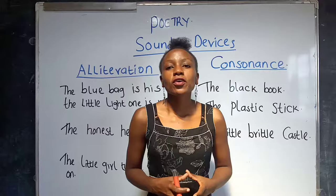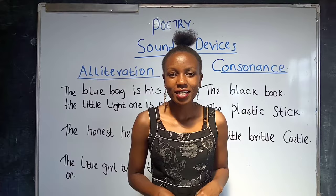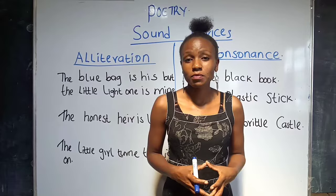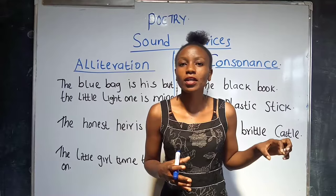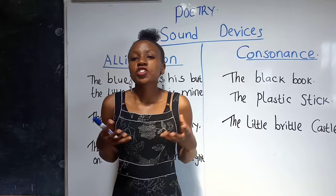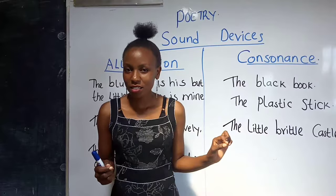I'll focus on three sound devices: alliteration, assonance, and consonance. I'll start by defining alliteration — it is the repetition of initial consonant sounds at the beginning of words which follow each other closely in a poem. The keyword is initial consonant sounds, but not letters, in words which follow each other closely.